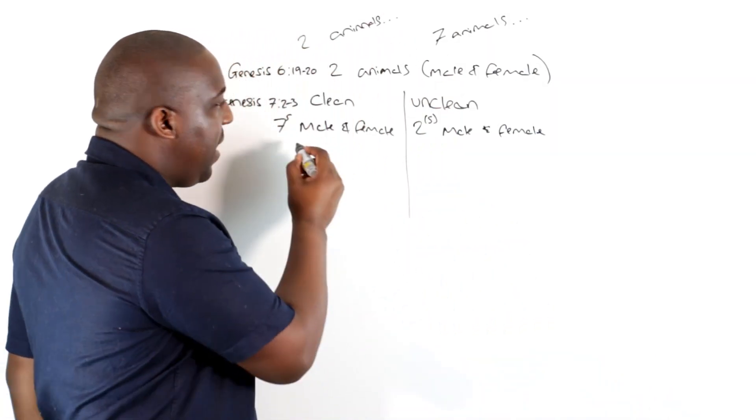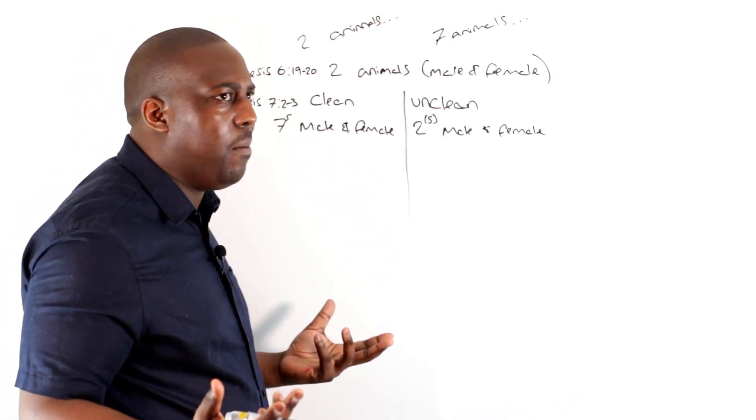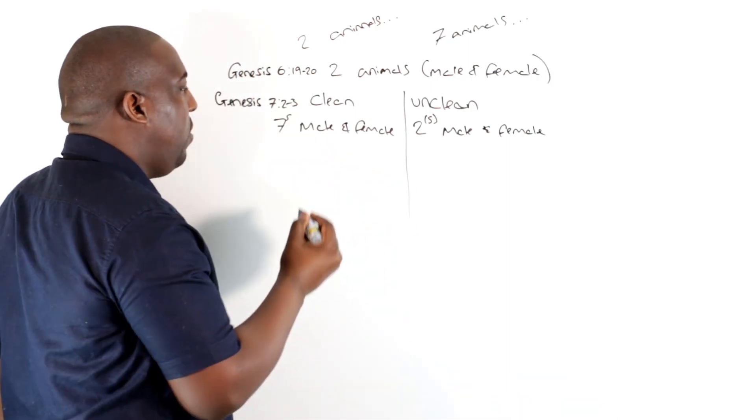For those of you wondering, how do you get a male and female in regards to seven? That doesn't make sense. Seven is an odd number. Well, that gives you the answer. What God is alluding to here is seven pairs of animals, which would be 14.